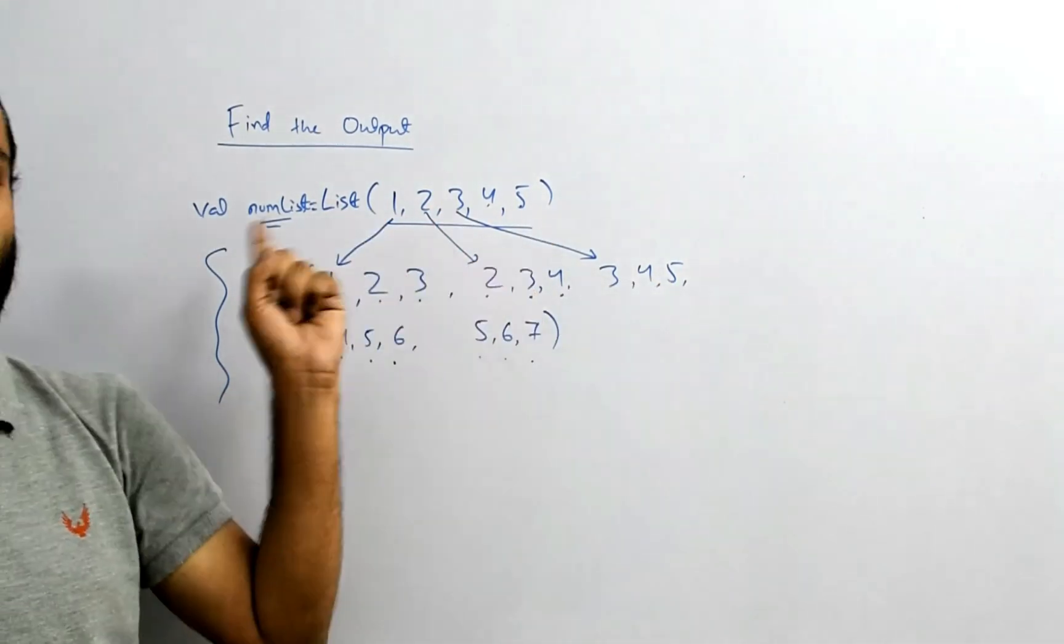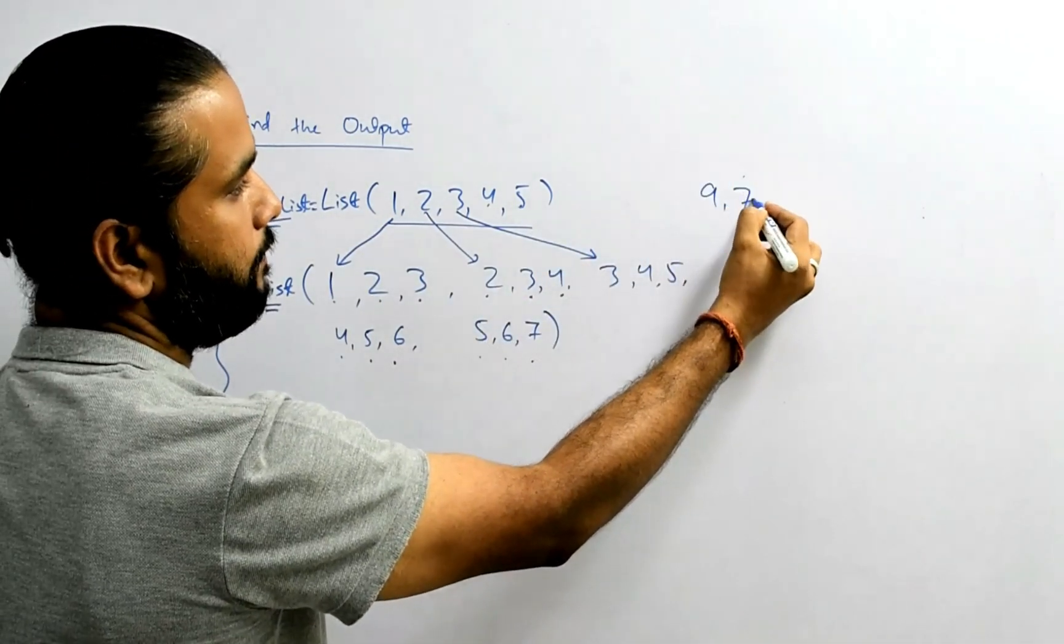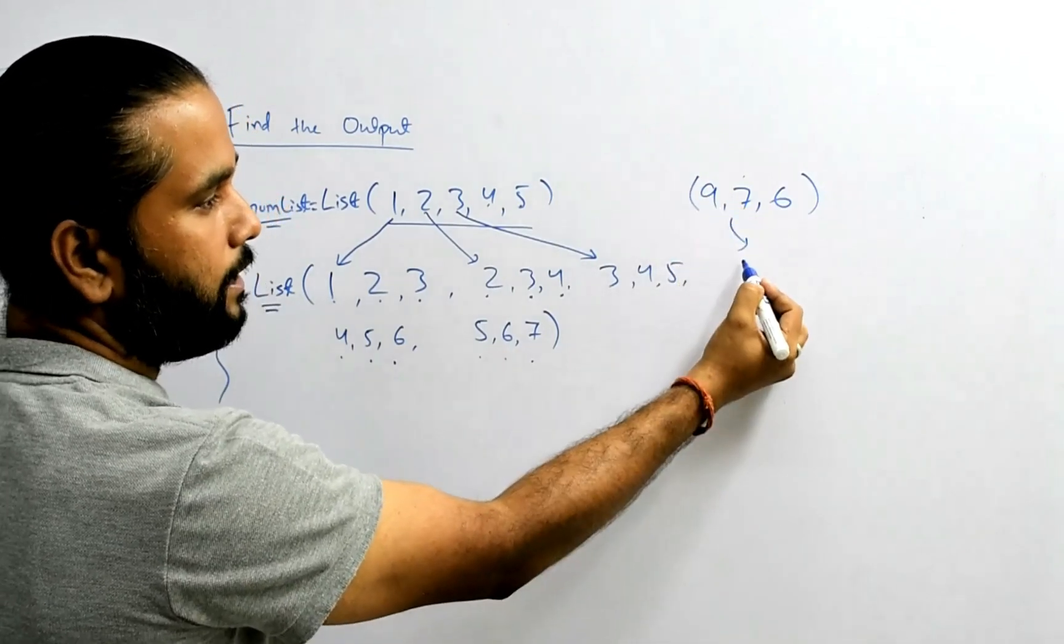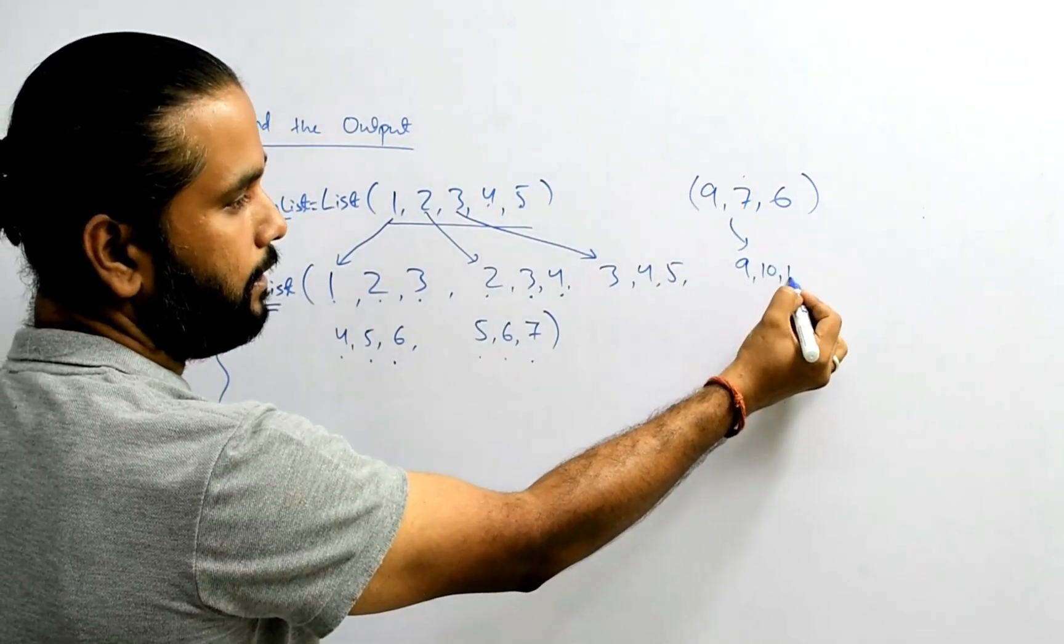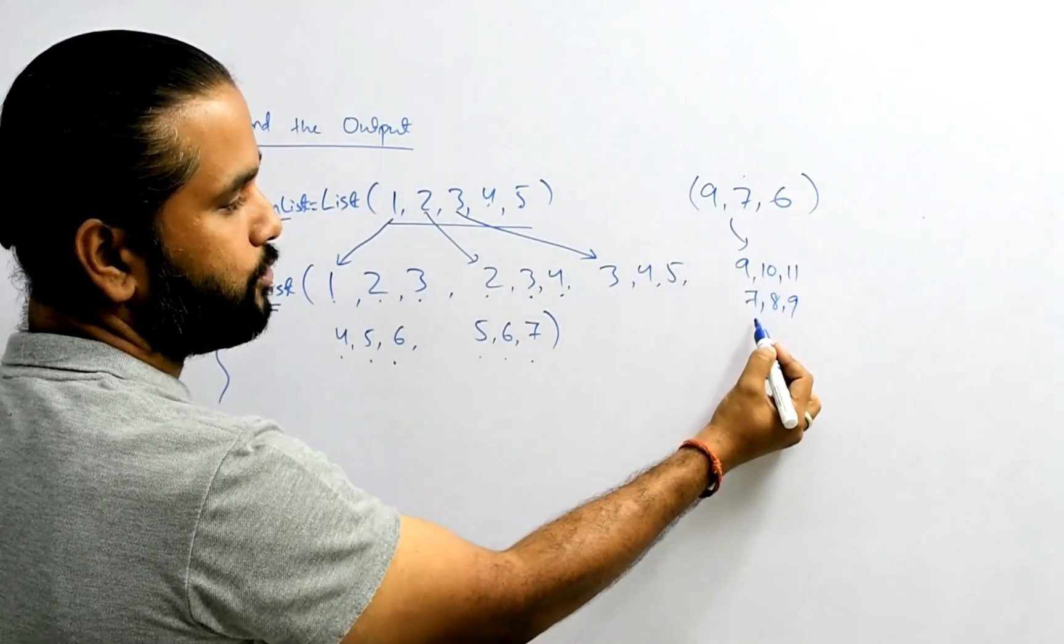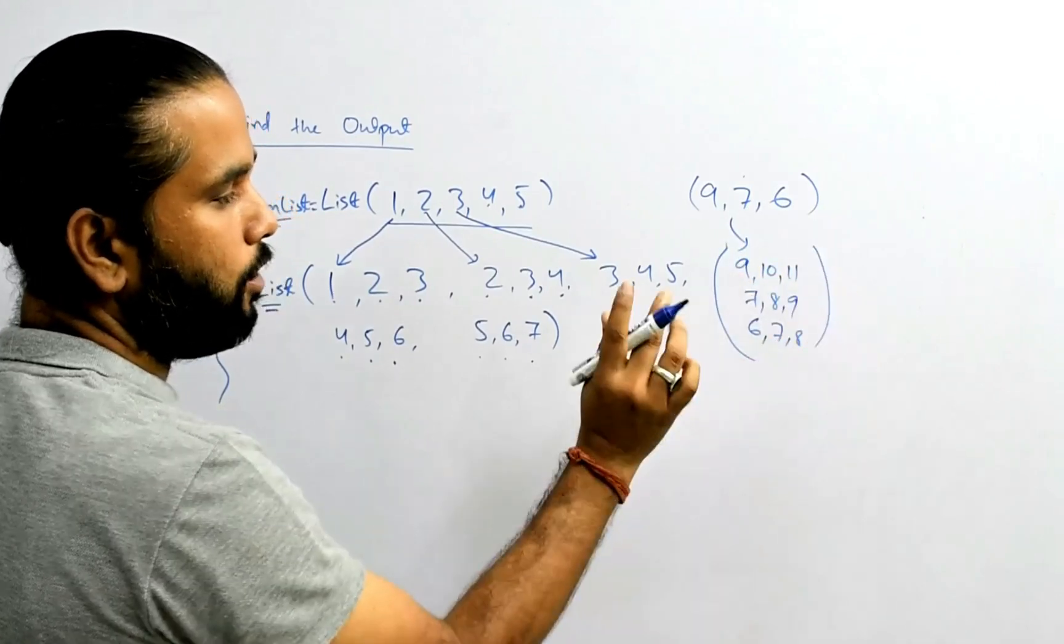And this number could be anything. So if I say my number is 9, 7, 6, then what should I get is for 9 I should get 9, 10, 11. For 7 I should get 7, 8, 9. For 6 I should get 6, 7, 8, and this would be my output altogether.